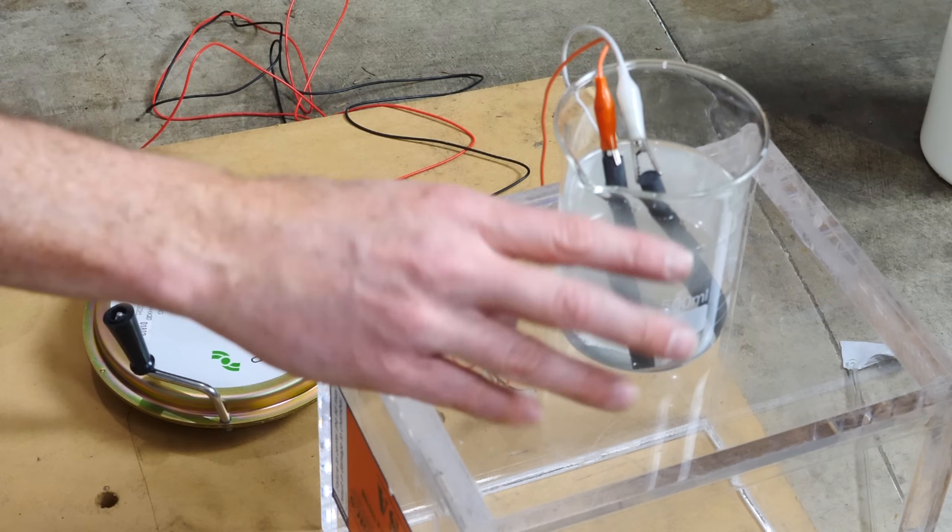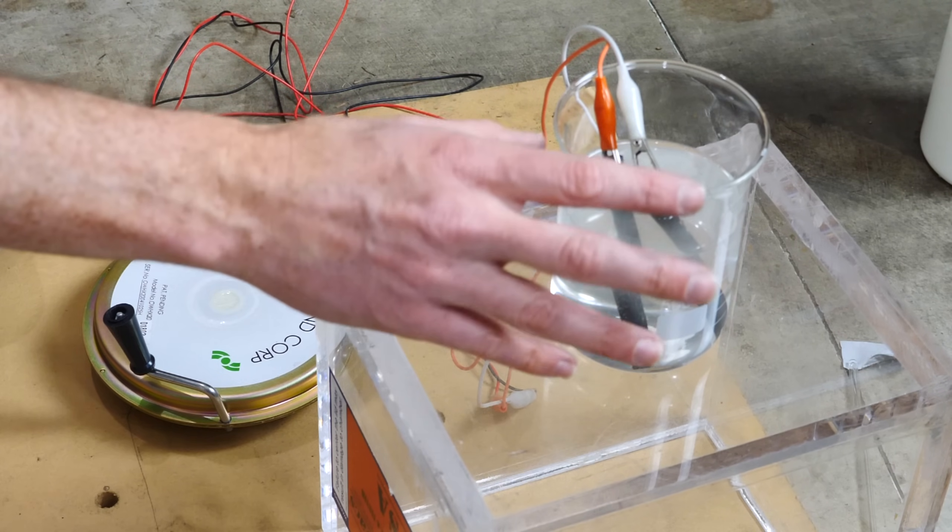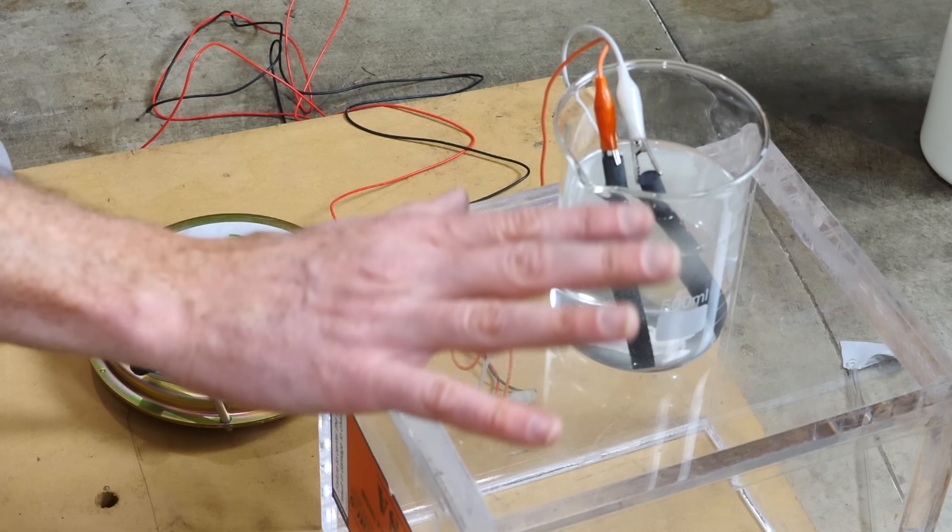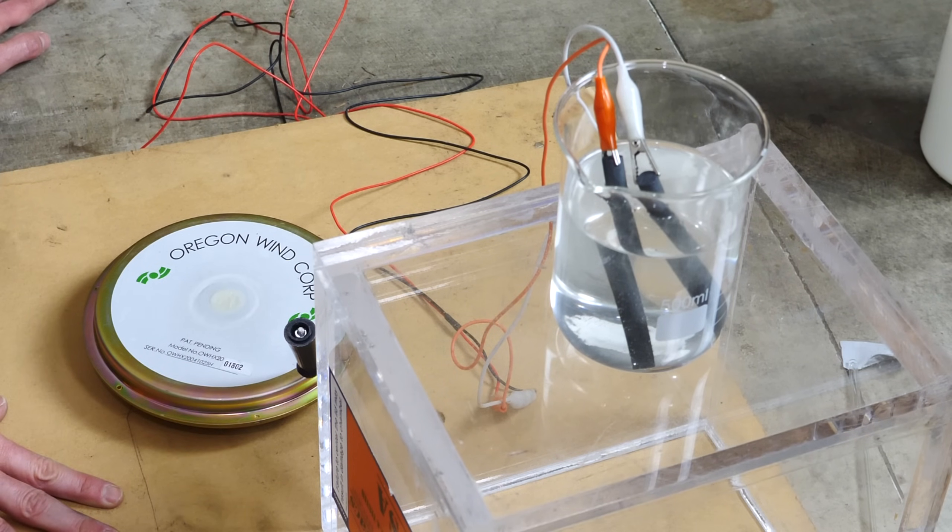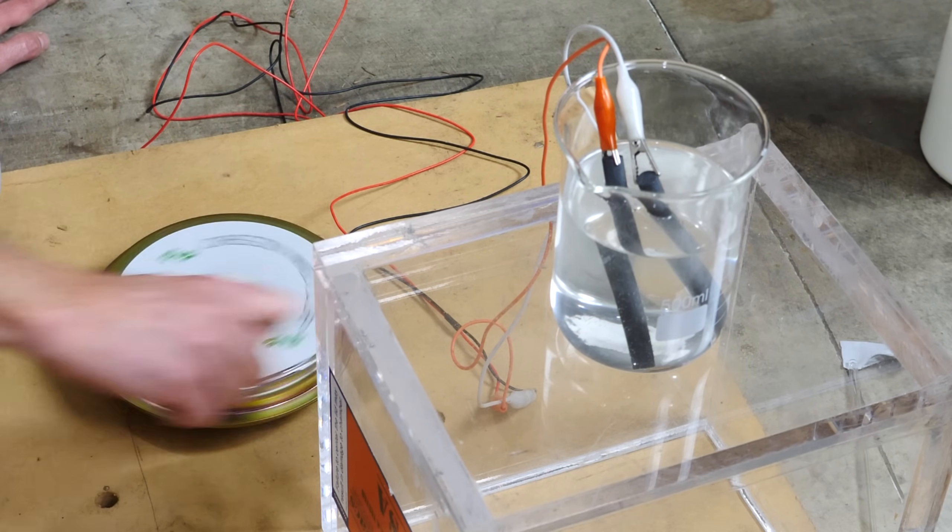And if you get a lot of that, it's very explosive because hydrogen and oxygen mixed together and the perfect stoichiometric ratio is very explosive. So there you go, a hand crank hydrogen oxygen generator.